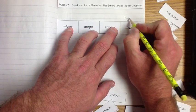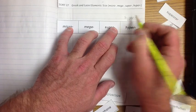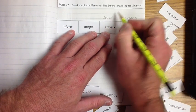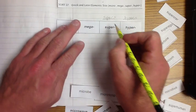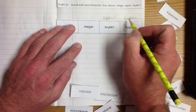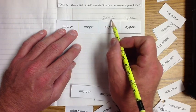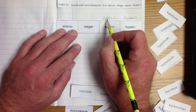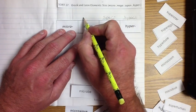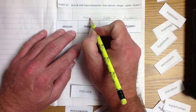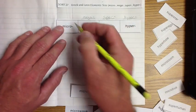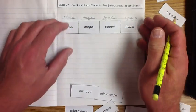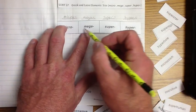So we're going to start by writing hyper dash. Now, remember what the dash means? Tell me. Exactly. The dash means that there's a word that goes after this, should I say, prefix?